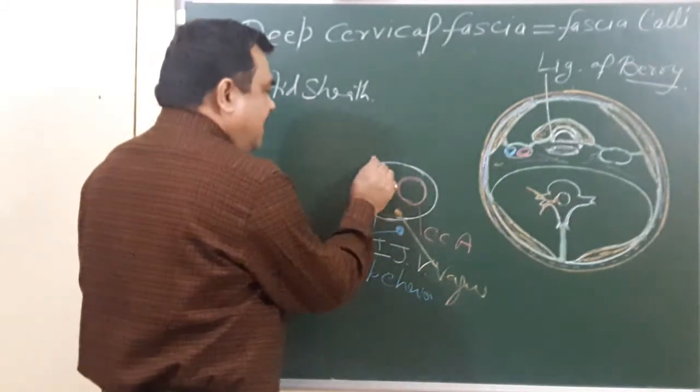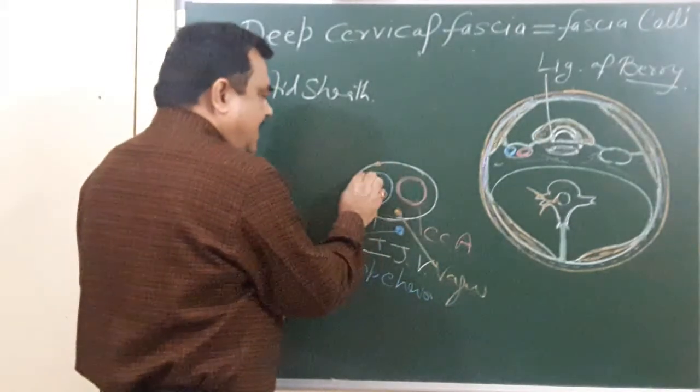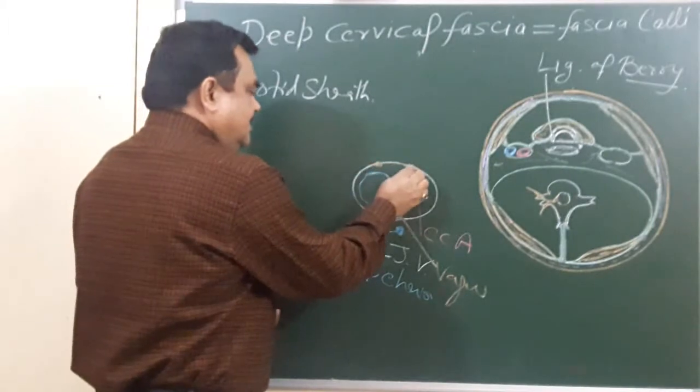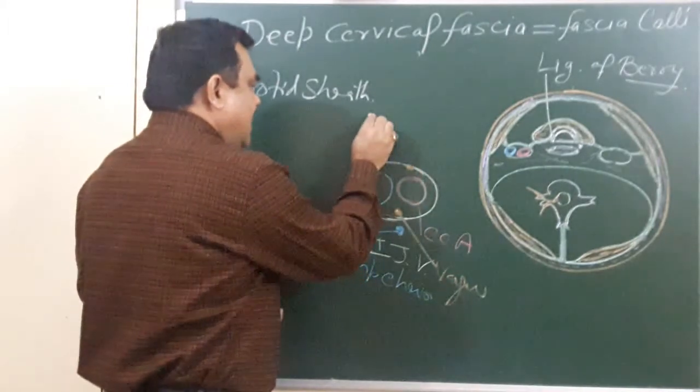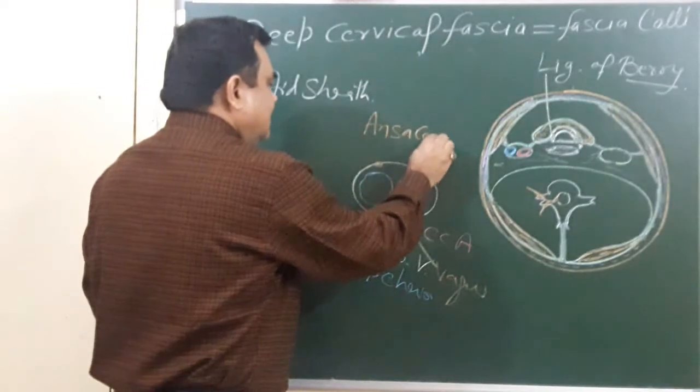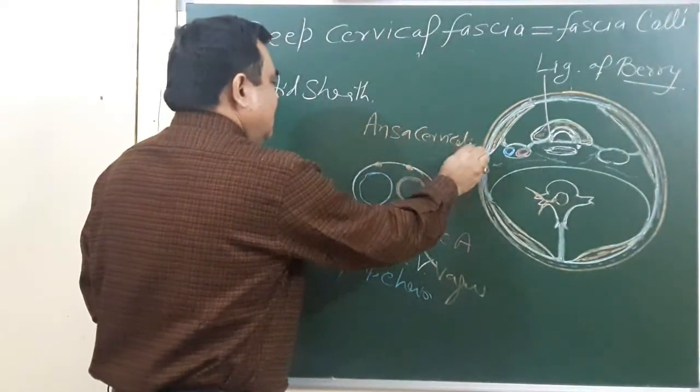Another thing which lies anteriorly and is embedded in this sheath is the ansa cervicalis—loops of the ansa cervicalis.